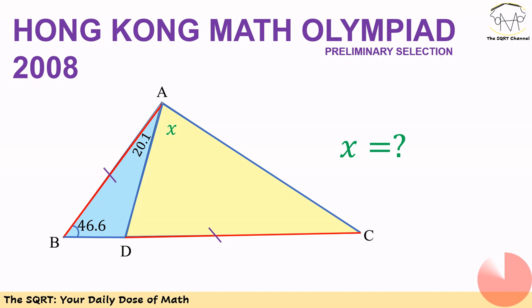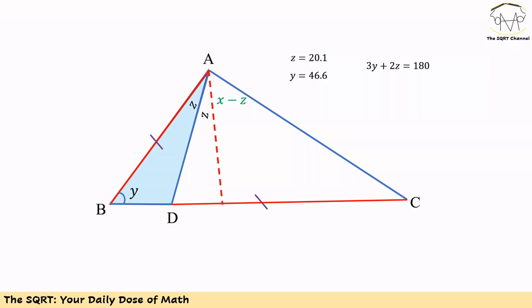To solve this problem, let's use Y for angle B and Z for the angle BAD of 20.1°. So Z is equal to 20.1 and Y is equal to 46.6.